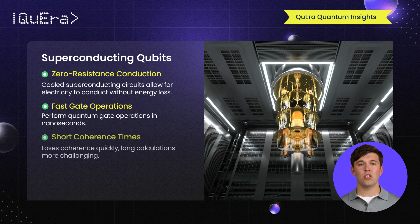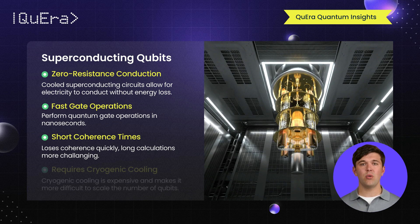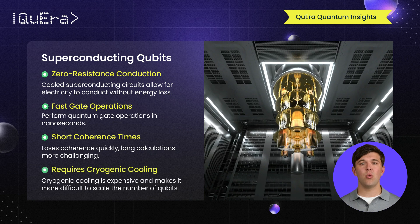However, superconducting qubits have short coherence times, meaning they can lose their quantum states quickly, making it more challenging to complete long calculations. They also require complex and expensive cooling systems, which can limit scalability — a key factor in solving truly useful problems.